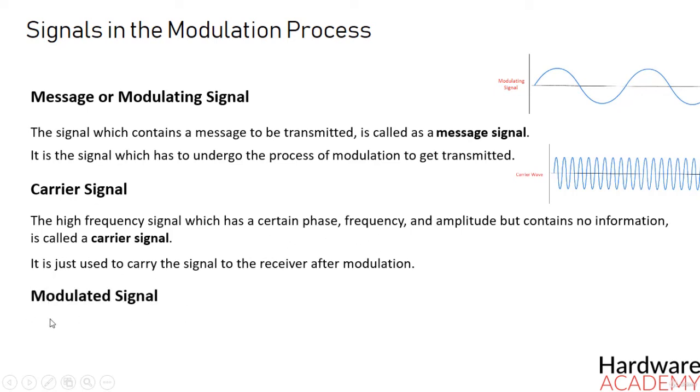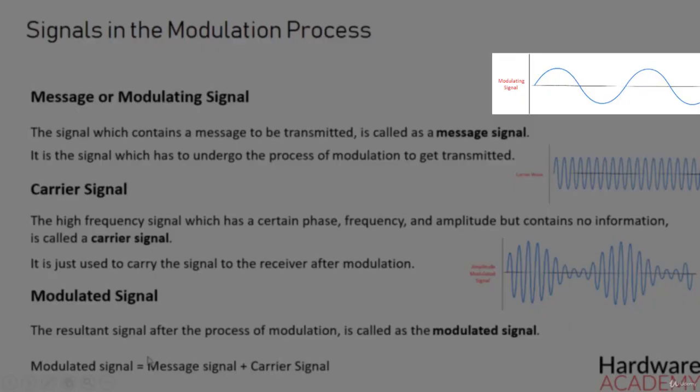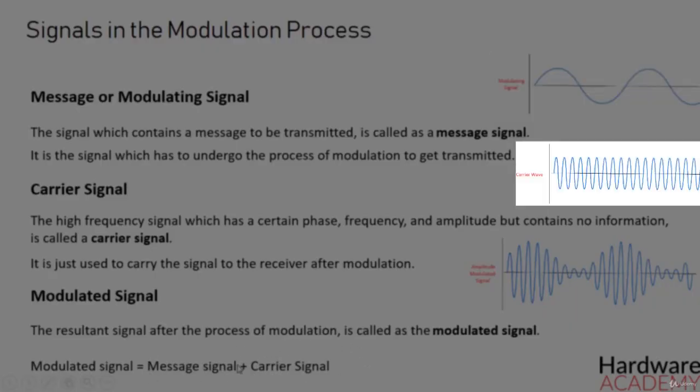The resultant signal after the process of modulation is called as the modulated signal. This signal is a combination of the modulating signal and the carrier signal.